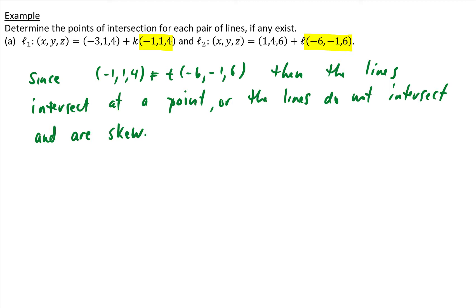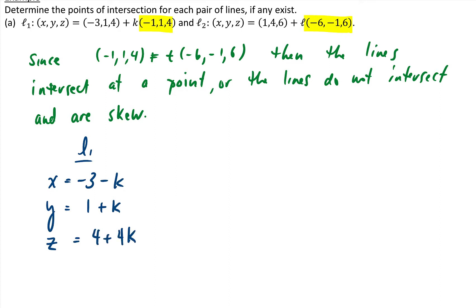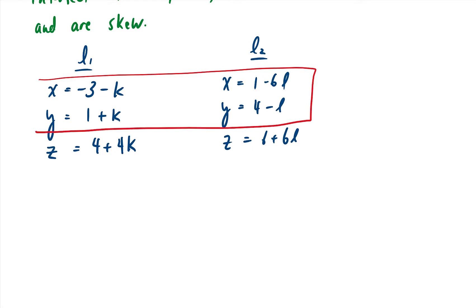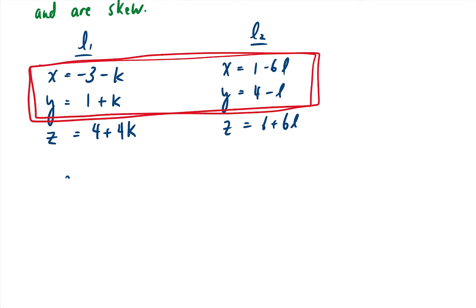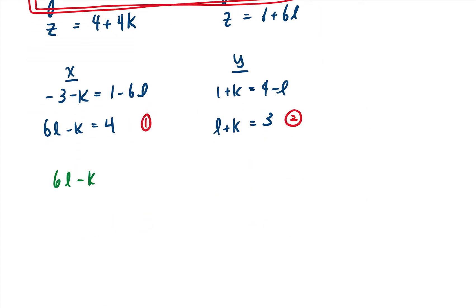Let's determine which of those two cases we have. The method I like to use is to rewrite both equations in parametric form. Starting with line one, then line two, we take the x and y components and substitute them into each other. Then we rearrange and do the same for the y components. Now we have two equations and two unknowns, so we can solve for the values of l and k. Using elimination, we add the two equations together.